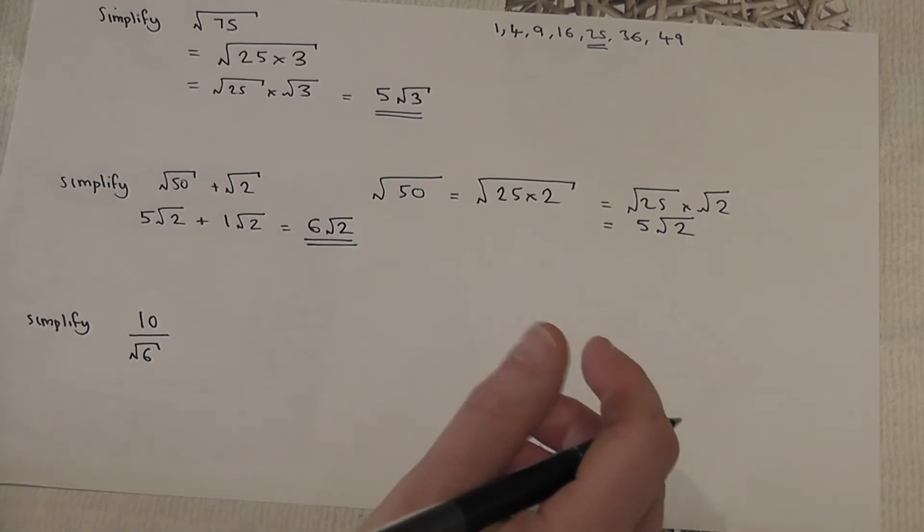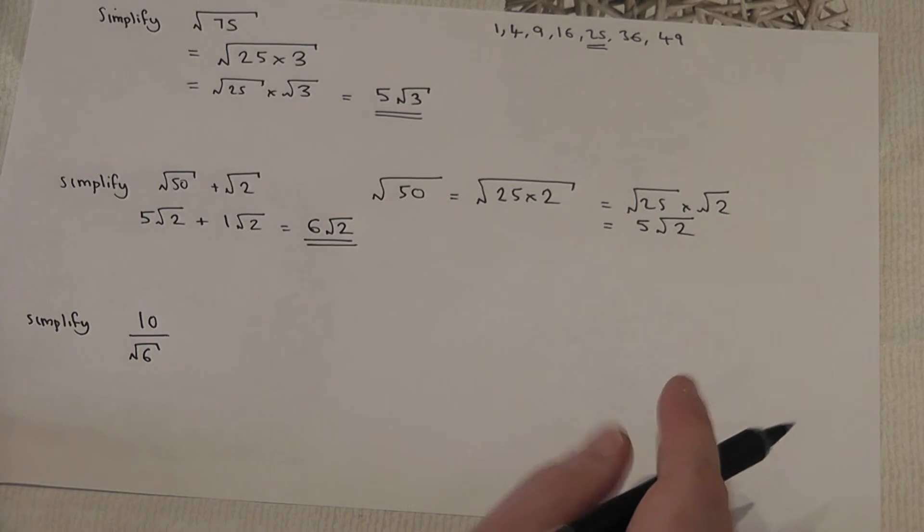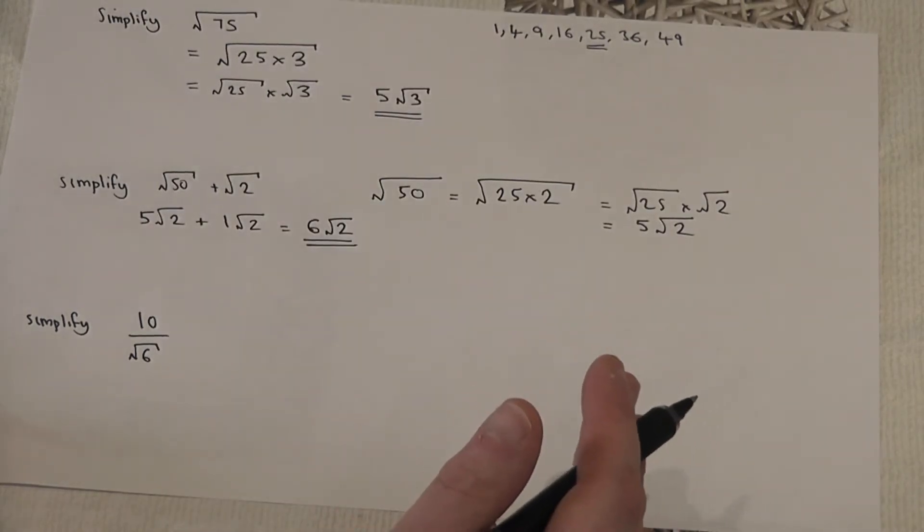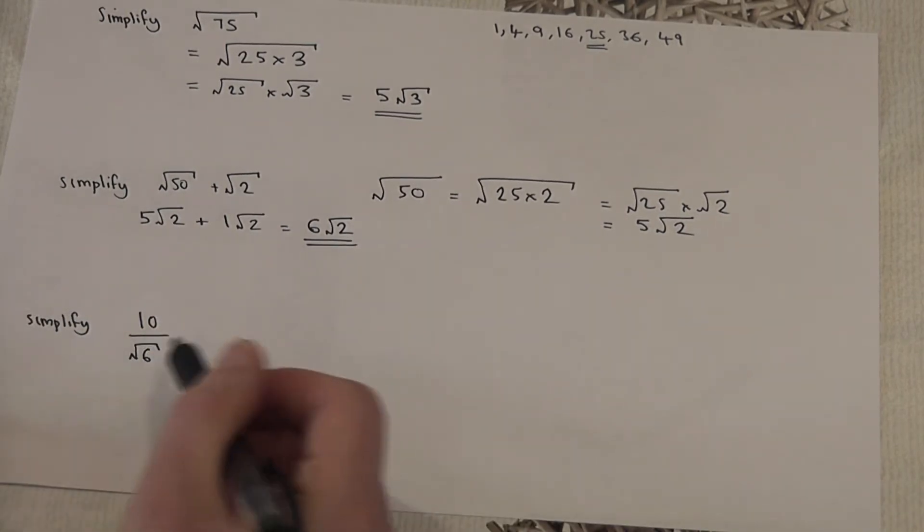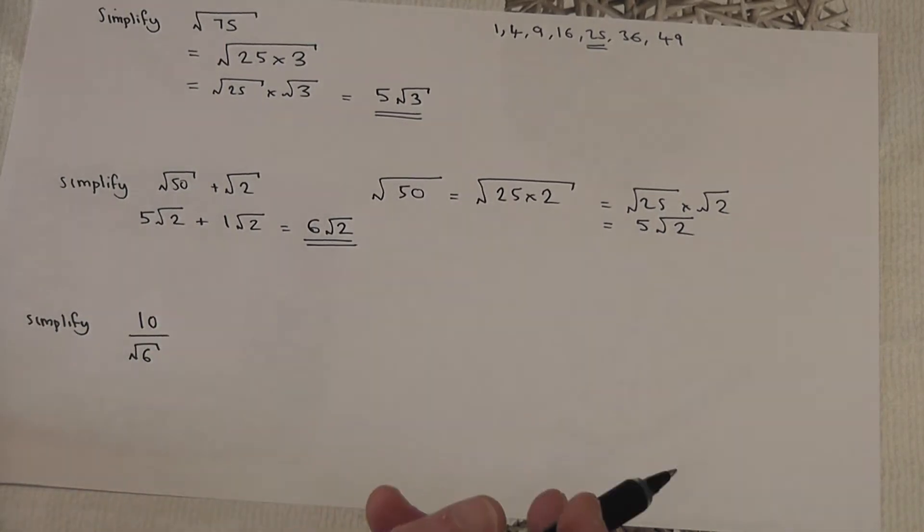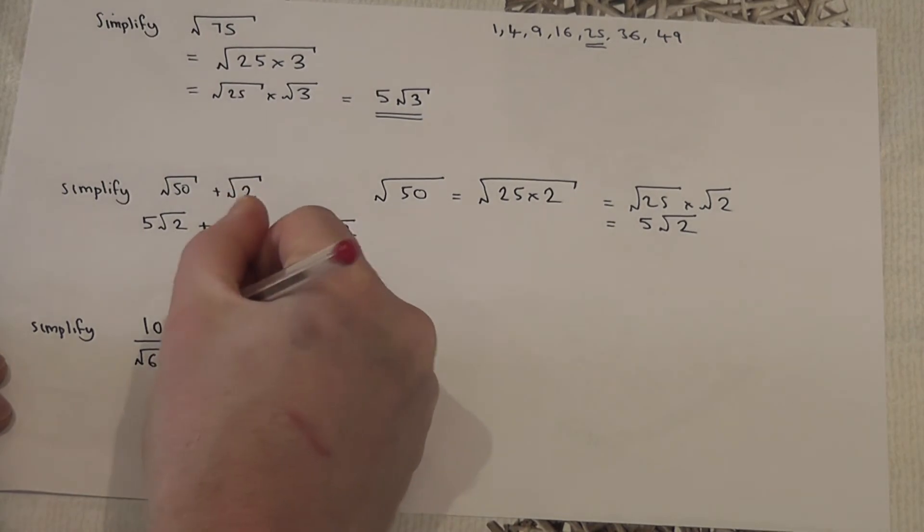Now the last skill involves fractions and surds. There's a golden rule to this type of question, and the idea is to get surds away from the bottom of the fraction. What we do is we multiply top and bottom of the fraction by the square root.